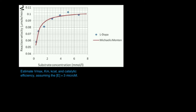Welcome back to Enzyme Kinetics and Function. My name is Kevin Tokoff. Make sure to like this video and subscribe to the channel for future videos and notifications. In this video, we're going to analyze a Michaelis-Menten curve or Michaelis-Menten plot, and then determine four kinetic parameters for this particular enzyme: the Vmax, the Km, the Kcat, and catalytic efficiency, assuming that the concentration of the enzyme is 3 micromolar.